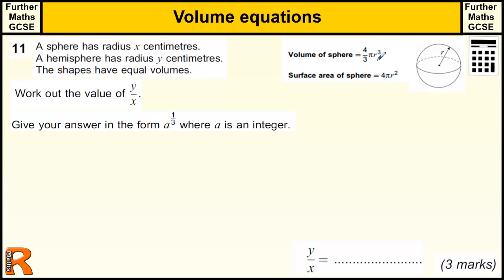So let's just start with the volume of the sphere. The sphere is going to be equal to 4 thirds pi r cubed. Now r is x, so that's x cubed.